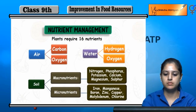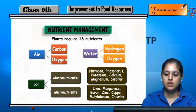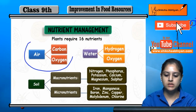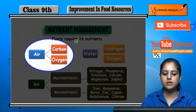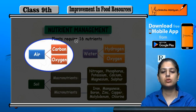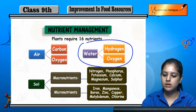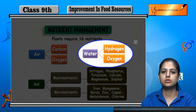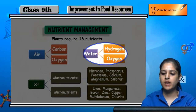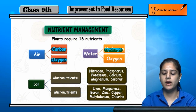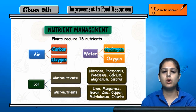First, let us look at nutrient management. Plants need a total of 16 nutrients. The nutrients are: 1. From air — carbon and oxygen. 2. From water — hydrogen and oxygen. So the main 3 nutrients are carbon, oxygen, and hydrogen, which come from air and water.